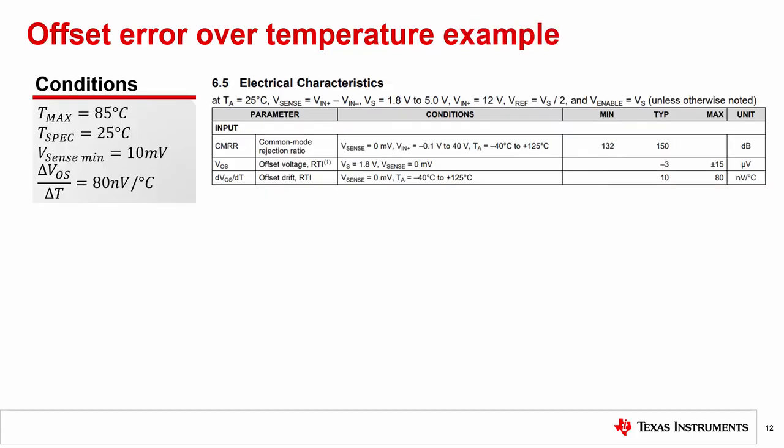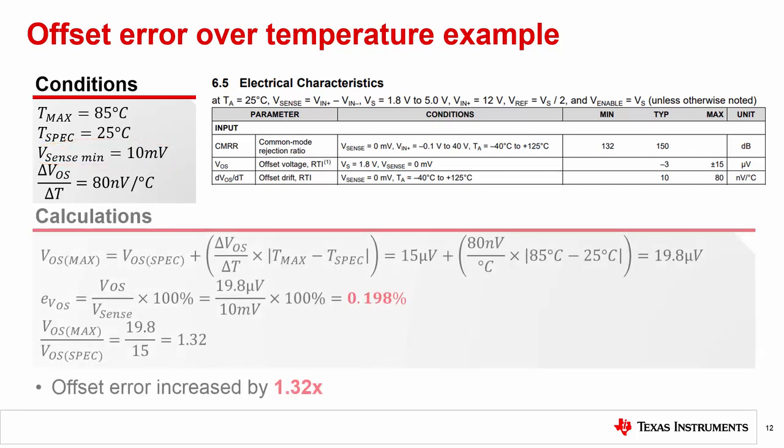Now let's work an offset drift example. Because of the low offset voltage specification, we decide to work with the INA190, which has an offset drift of 80 nanovolts per degree C. Our max operating temperature is expected to be 85 C. Minimum voltage across the shunt is expected to be 10 millivolts. Plugging the conditions and specifications we have into the voltage offset equation equals 19.8 microvolts. If we take the ratio of the voltage offset to V-sense and multiply by 100 percent, we get 0.198 percent, well under 1 percent, even after the offset increased by 1.32 times.